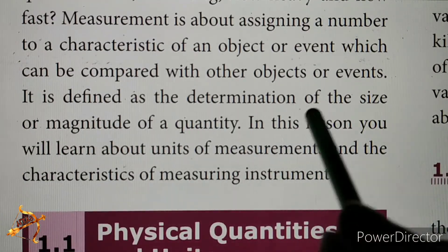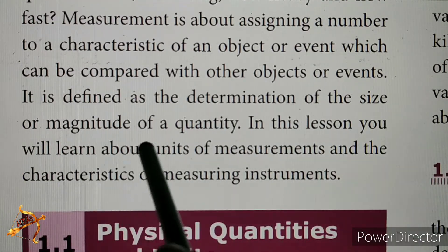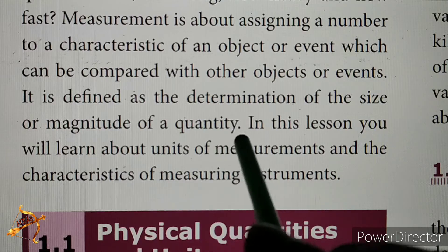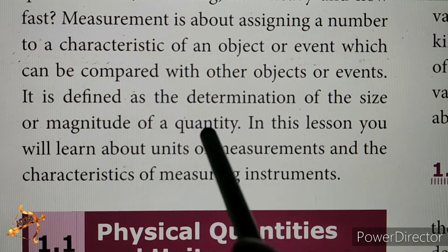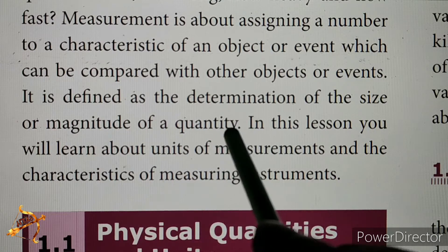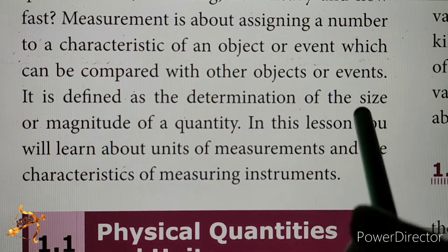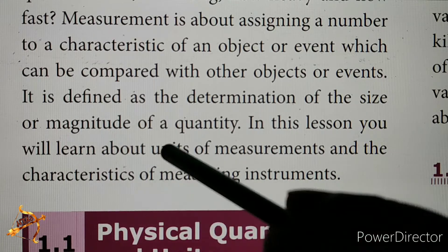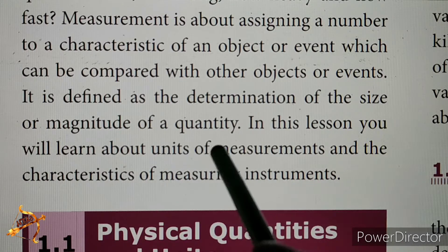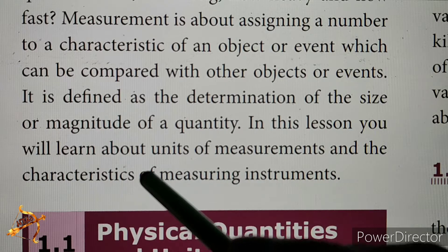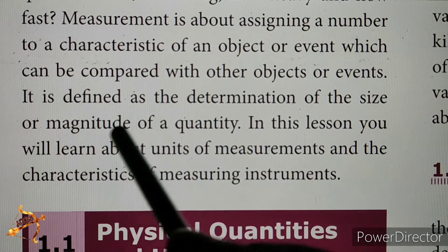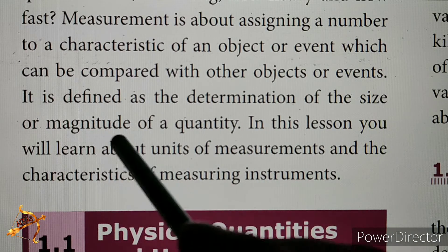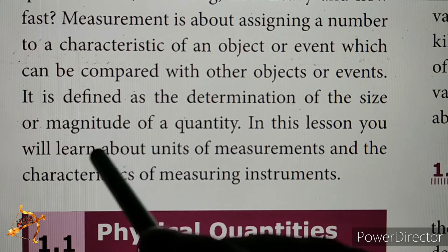Measurement is defined as the determination of the size or magnitude of a quantity. The measurement is a quantity — a size or magnitude. For example, a distance of 2 kilometers: the two kilometers is the magnitude.